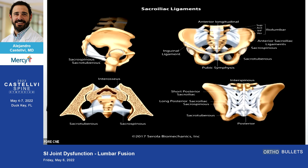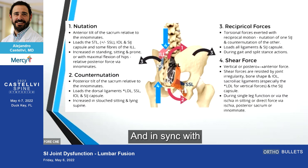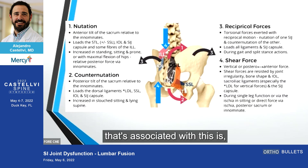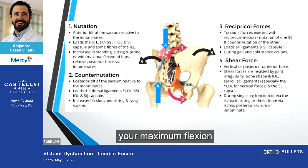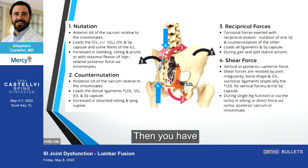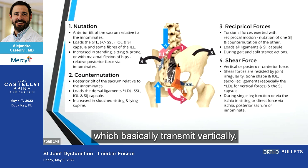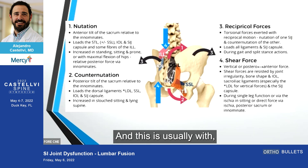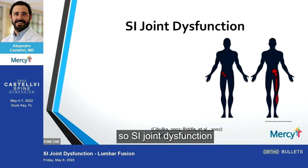The terminology associated with this — we were talking about this yesterday — is nutation, which is really the anterior tilt, basically your maximum flexion of the hips. Then you have counter-nutation, which is basically the extension, which is increased with lying supine. Then you have reciprocal forces and shear force, which transmit vertically — usually with single leg function, things like that.